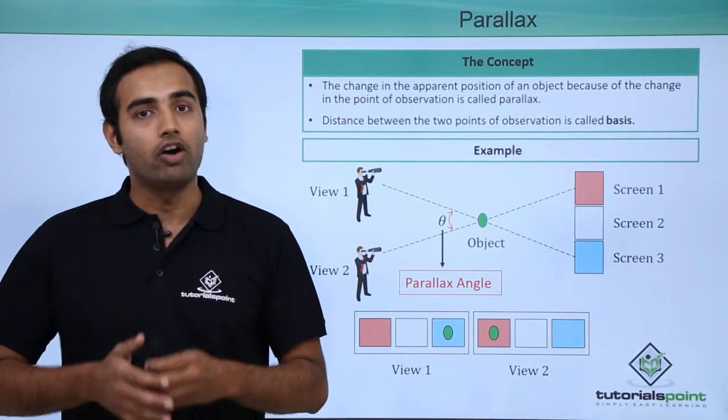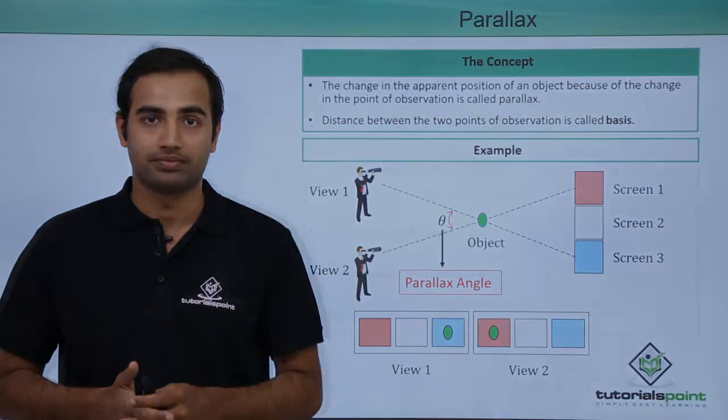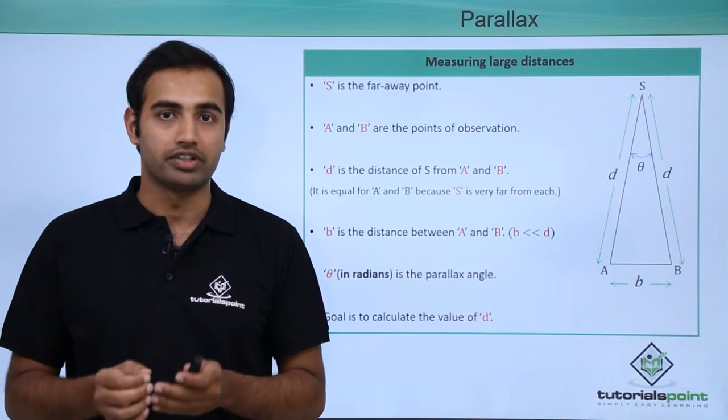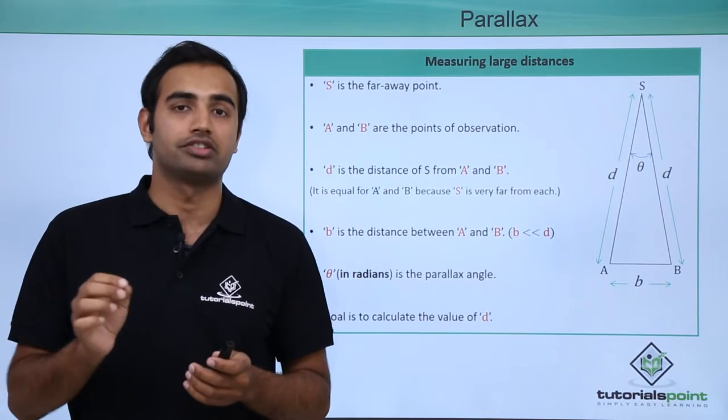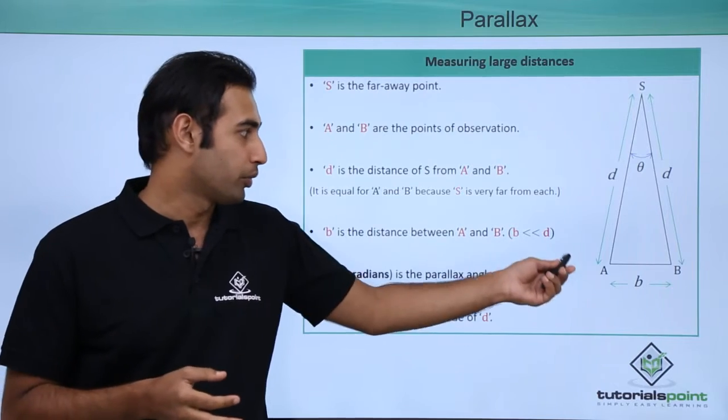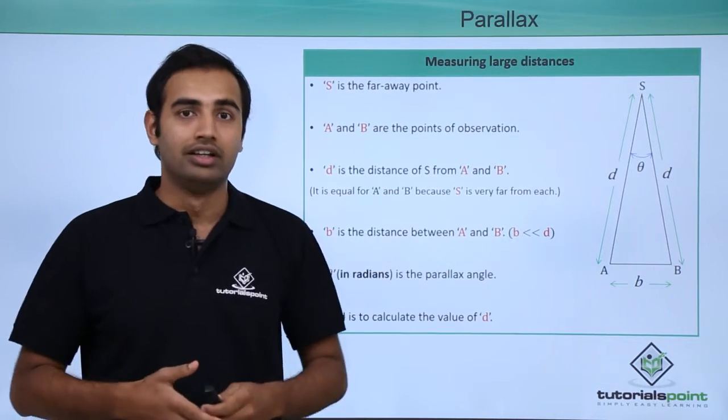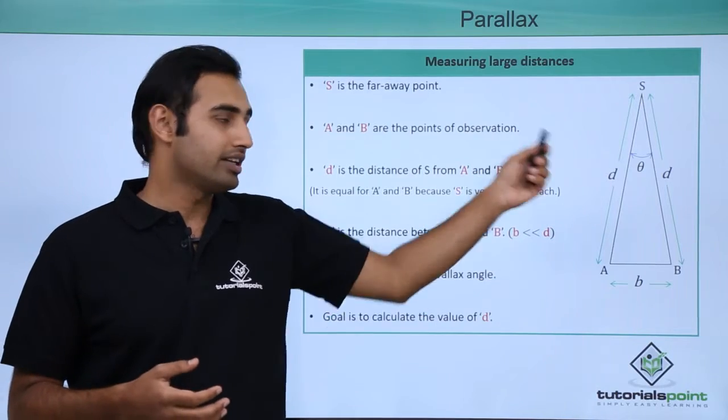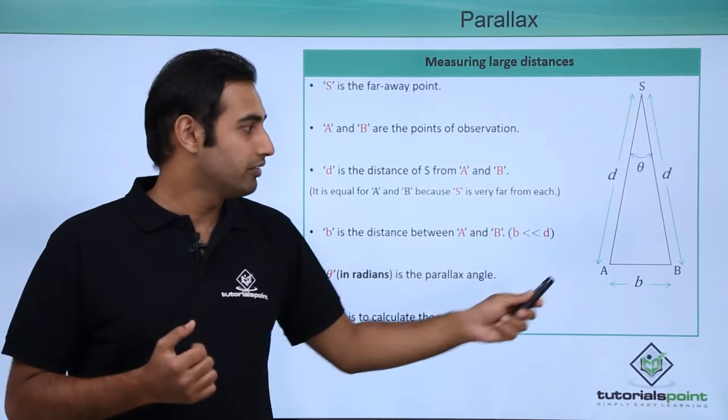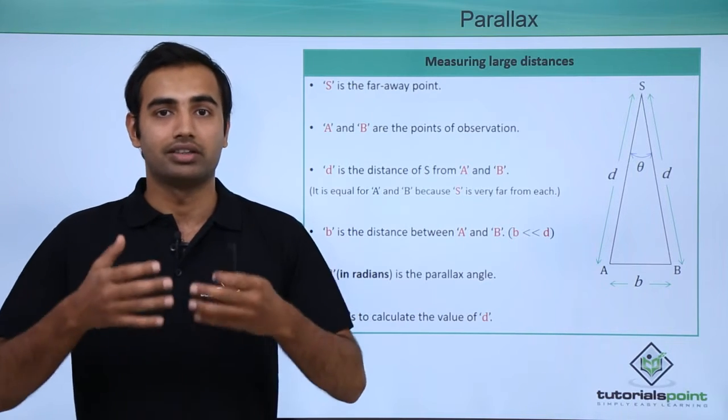Now we'll see how we can use this concept of parallax to estimate large distances. In this problem we have two points of observation which are observing an object which is situated at a very large distance. The points of observation are point A and point B and the object is placed at point S. The distance between S and A is small d and the separation between A and B is small b. Our goal is to estimate the length of d.